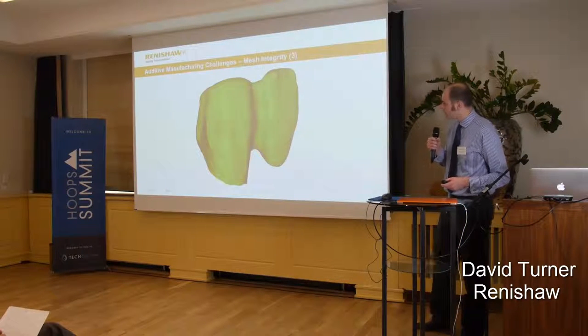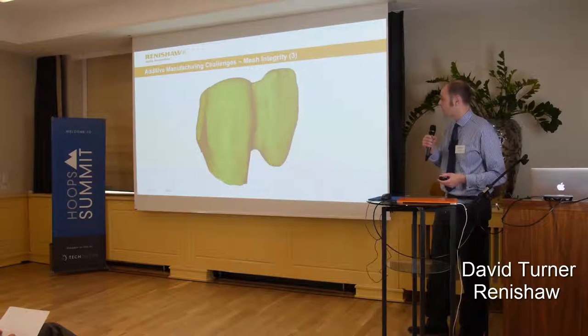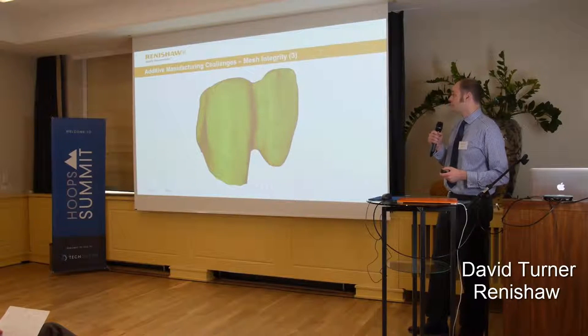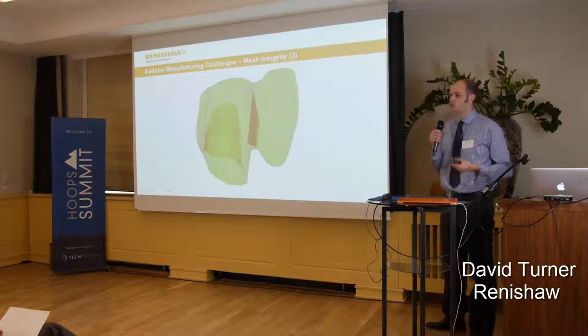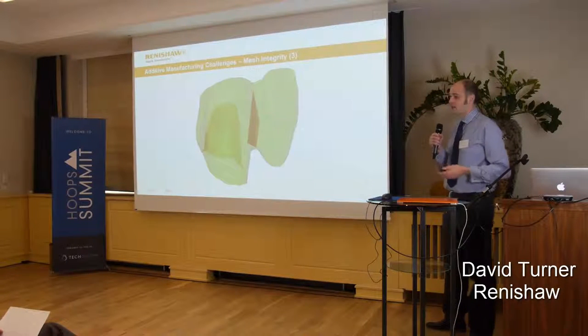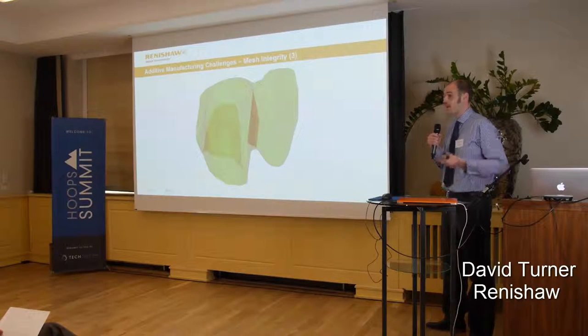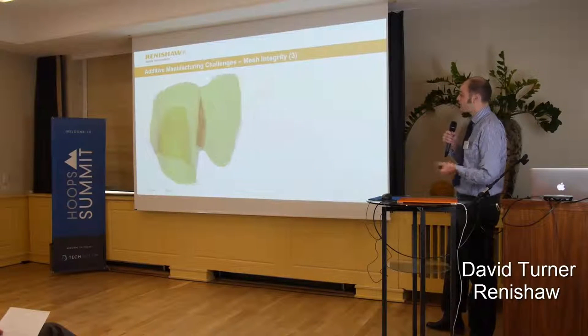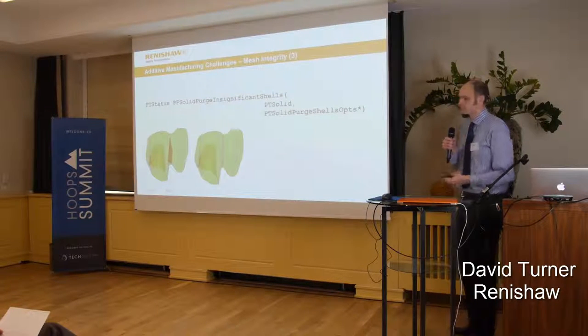This is a good example of something Jonathan didn't mention: floating shells — multiple shells within a body. This bridge, if you looked at it just from the outside in a viewer application, it would look fine. But when you zoom in and take it to a transparent mode, you can actually see where the connector is — there's a second shell within the body. This is a terrible scenario because it potentially creates a void in that connector, making it understrength. It could crack in the patient's mouth. So from Polygonica's point of view, we call the function PF solid purge insignificant shells, and it's all fixed.